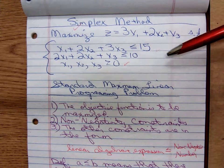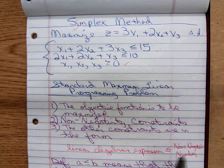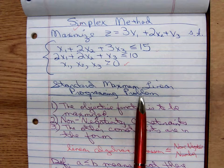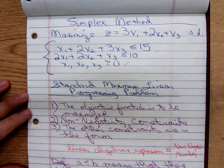Oh, pardon me, a standard maximum linear programming problem. The conditions for a standard maximum problem is that the objective function is to be maximized, and yes, it's been maximized.